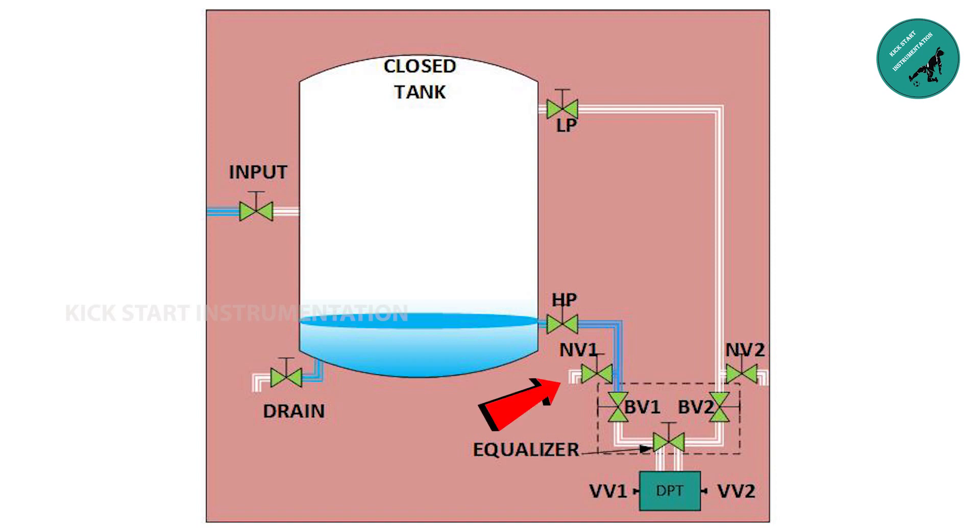The valves that are left closed after flushing will be needle valve 1, needle valve 2, block valve 1, block valve 2, equalizer valve, vent valve 1, and vent valve 2. High pressure SS tube is filled with process medium and low pressure SS tube is filled with gas of process medium after flushing.